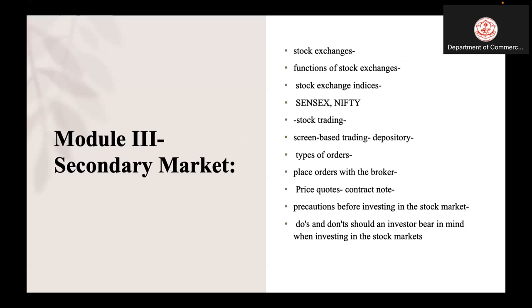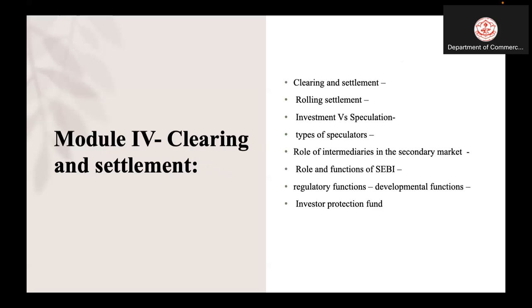Module 4 covers the clearing and settlement mechanism. Clearing and settlement means: after a trade takes place, how will the settlement occur? Earlier, we used the open outcry system and the settlement process was very slow — T+7 or T+8. Now it is rolling settlement. The settlement in the cash market is T+2 and in the delivery market it is T+1.